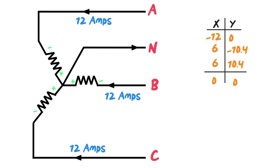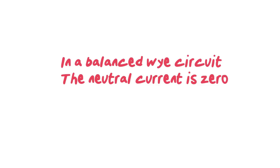So in a balanced Y or star configuration, your neutral current is going to be 0. In another video I will go through what the current will be in an unbalanced circuit, but in a balanced Y configuration, your neutral current will be 0.